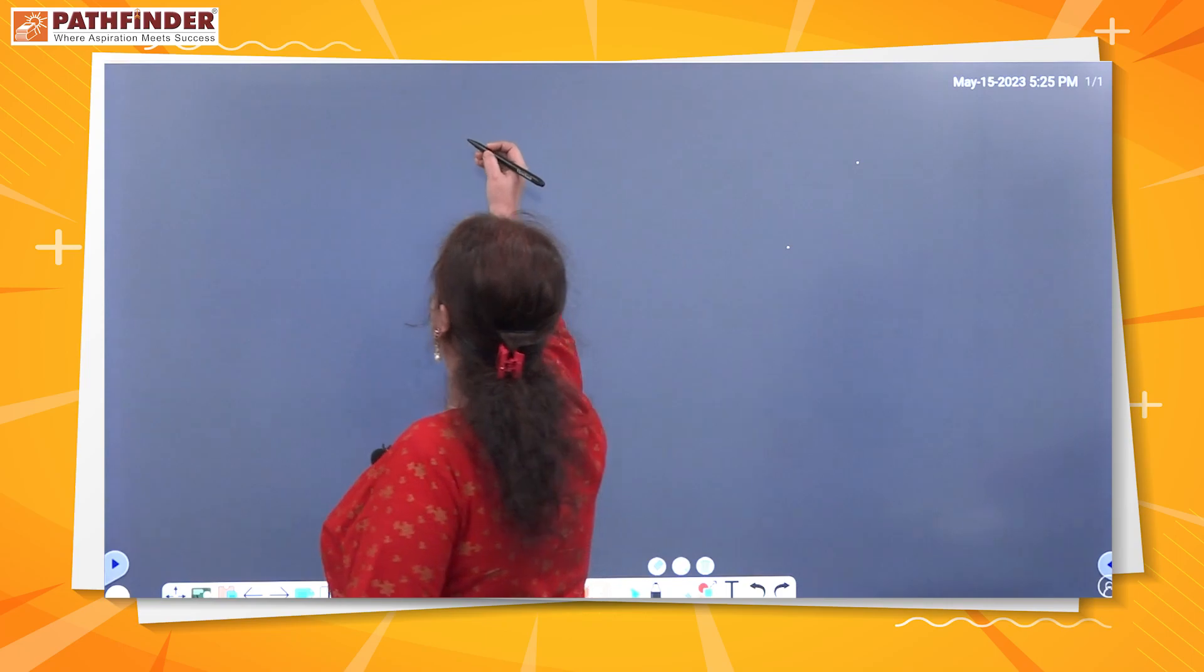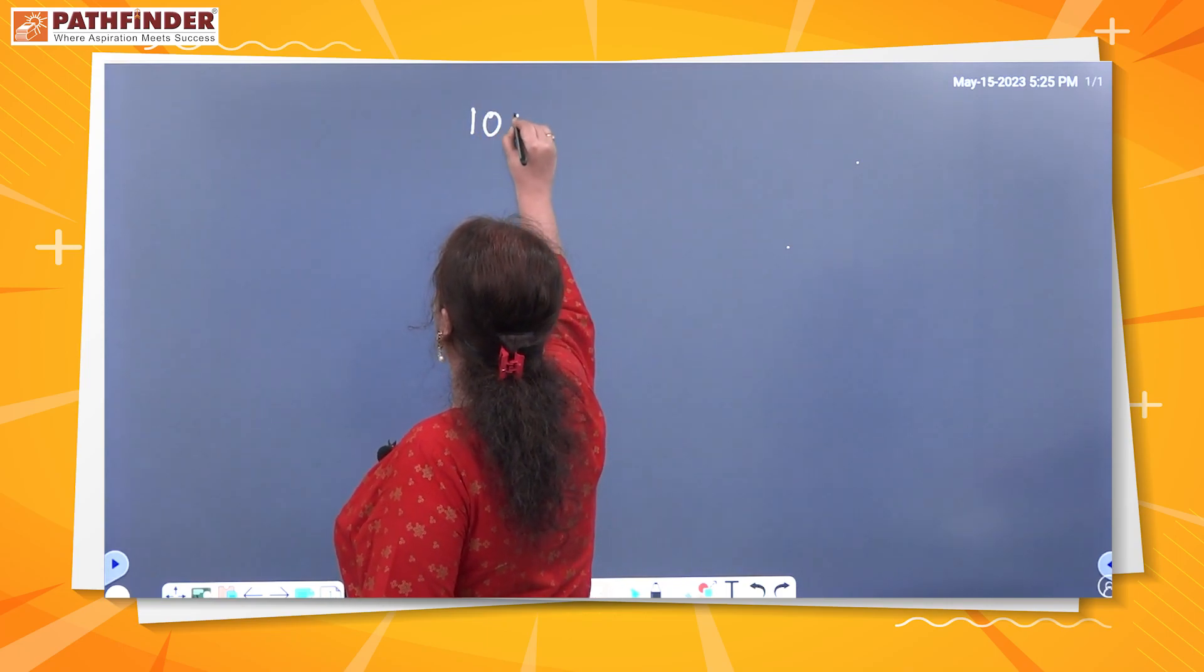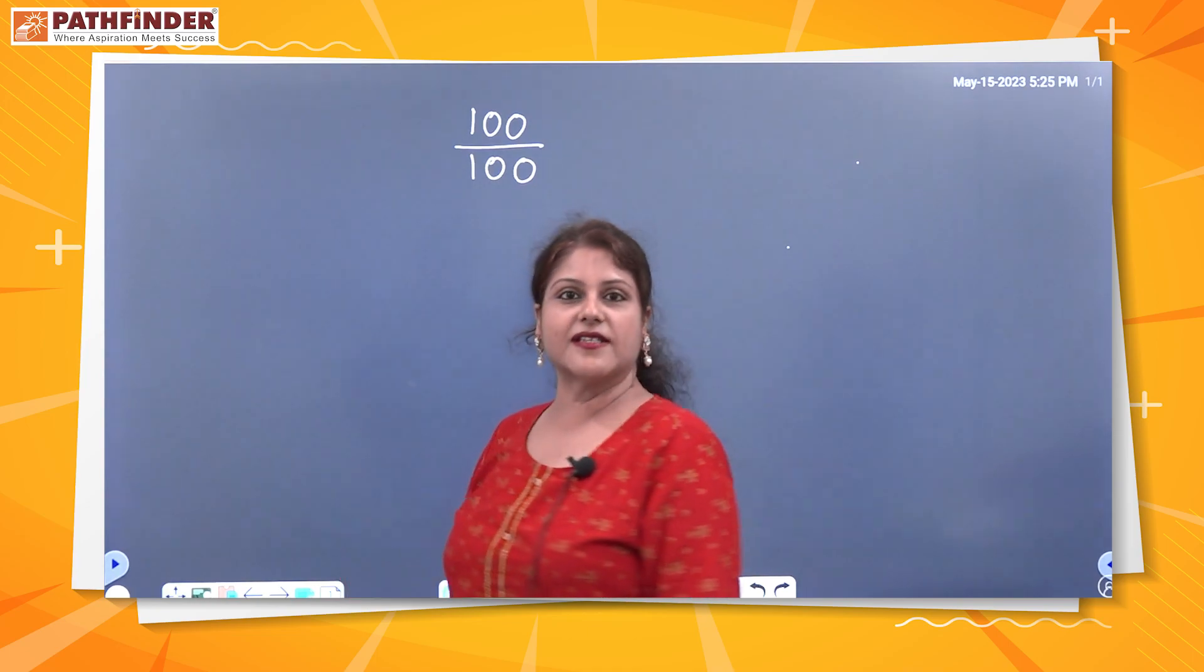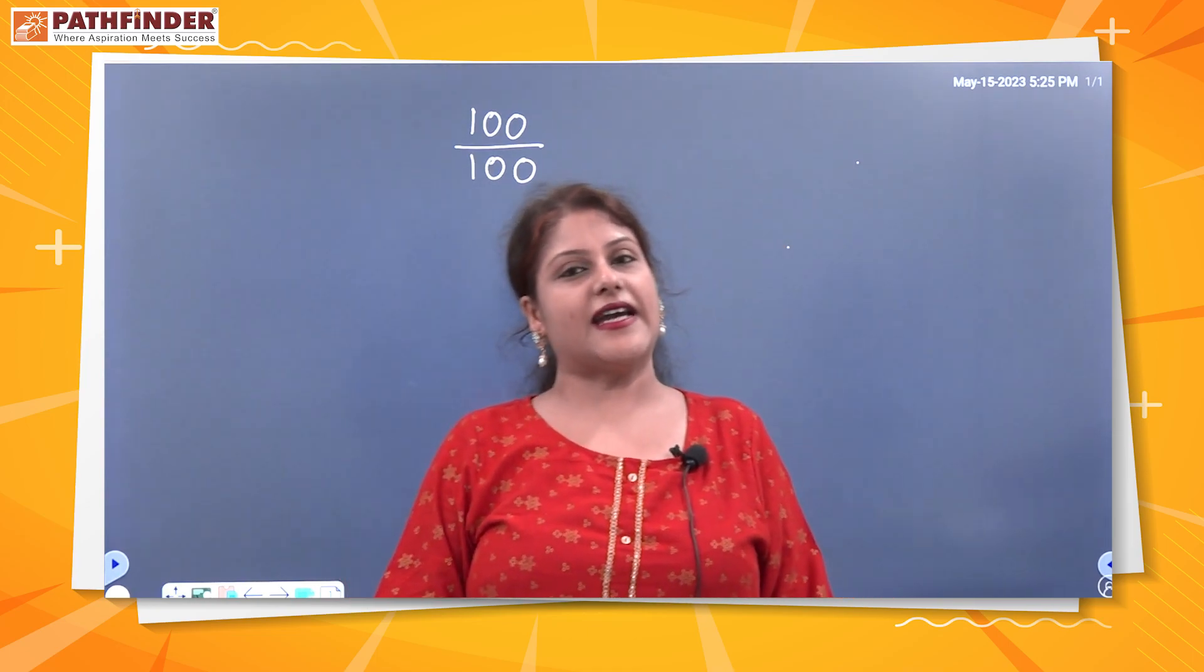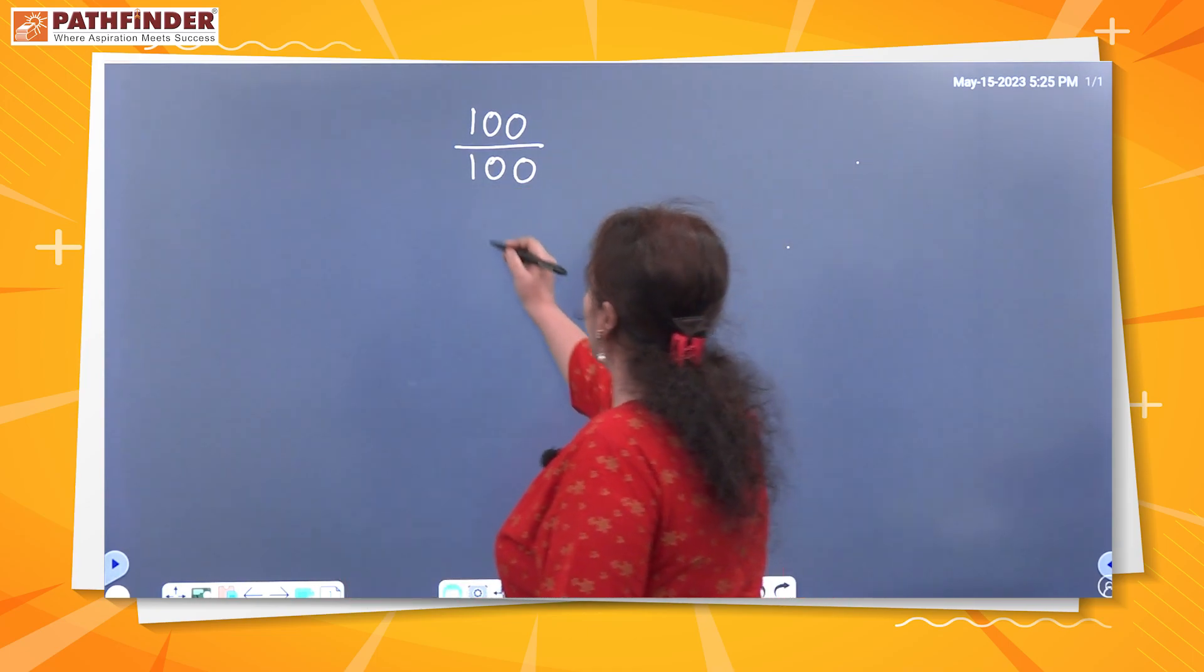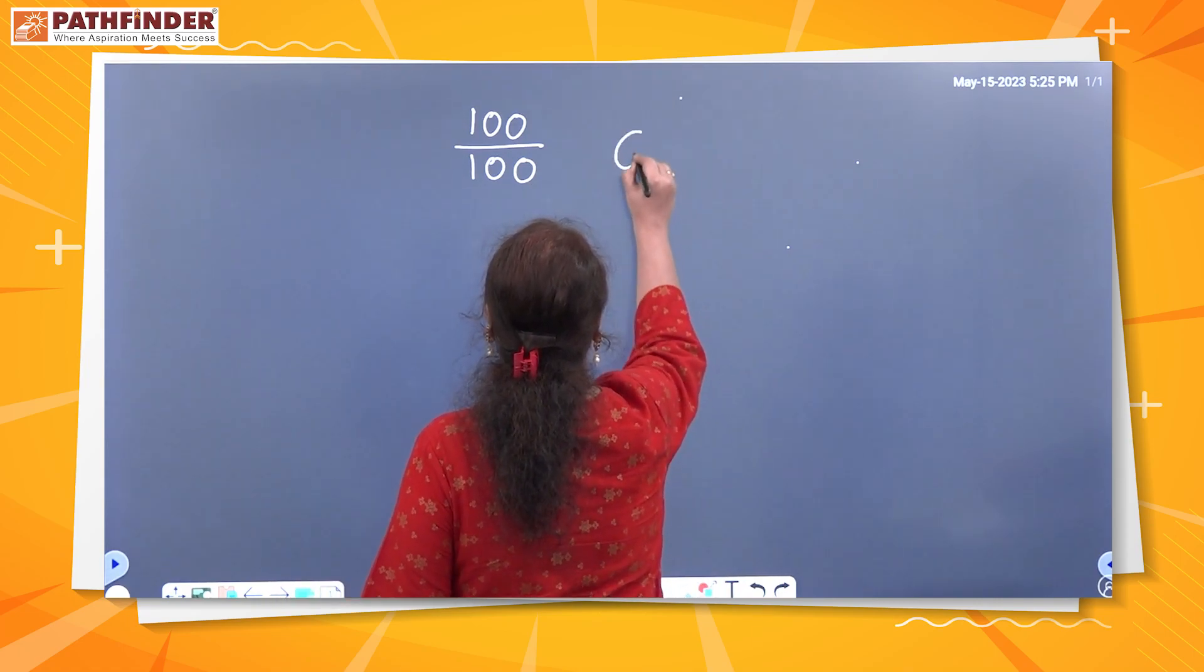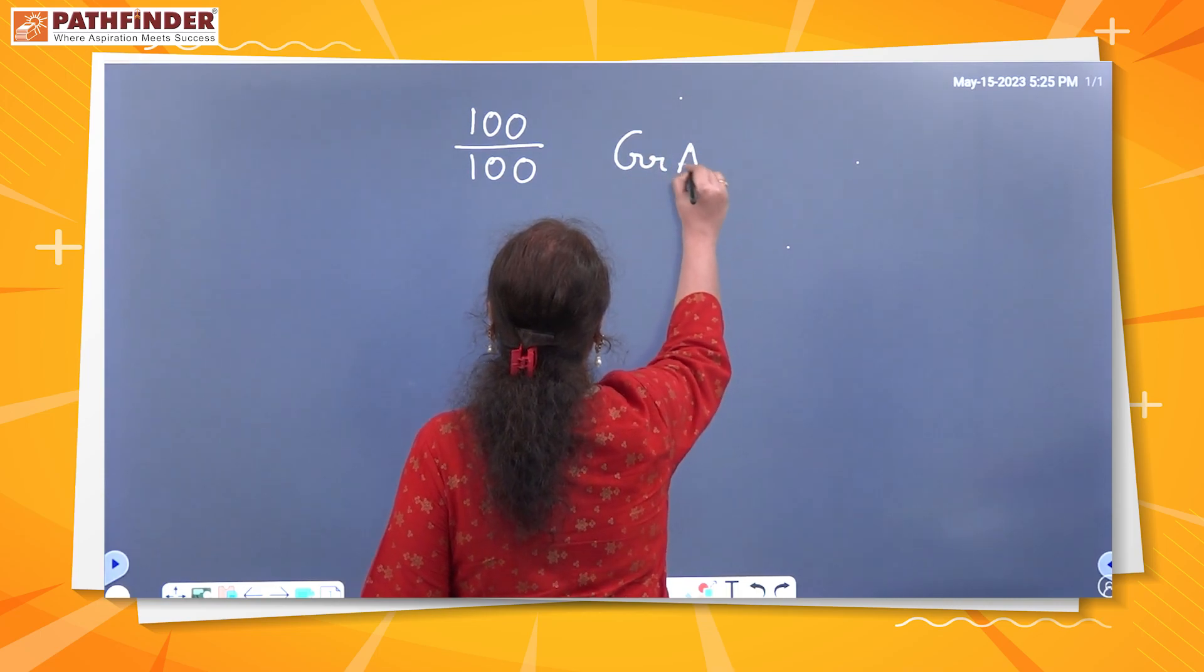Madhyamik life science is a very interesting subject. Our target is 100 out of 100. This is our basic target, right? To achieve this target, let's look at the marks distribution. How many groups are there? There are four groups.